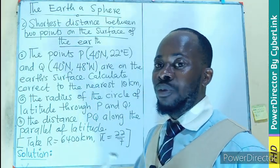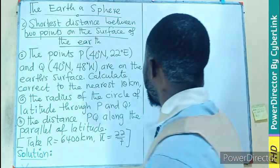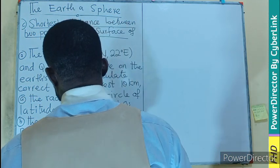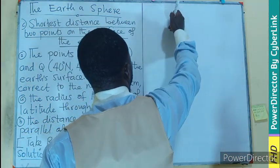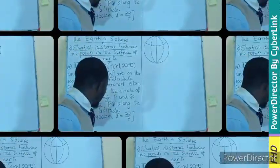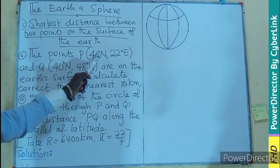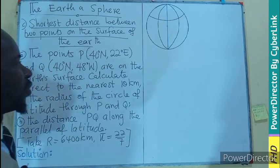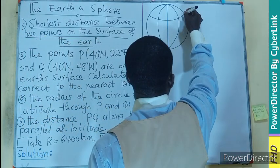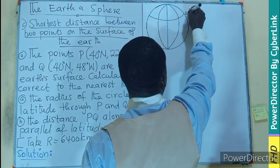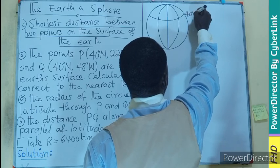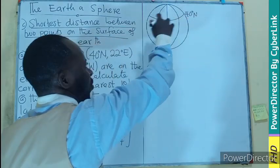So remember, the first thing to do is to make a sketch. So let's make a sketch of what the sphere is going to be. Okay, so from the question, we are having a common latitude, which is latitude 40 degrees. So this is going to be our 40 degrees north.